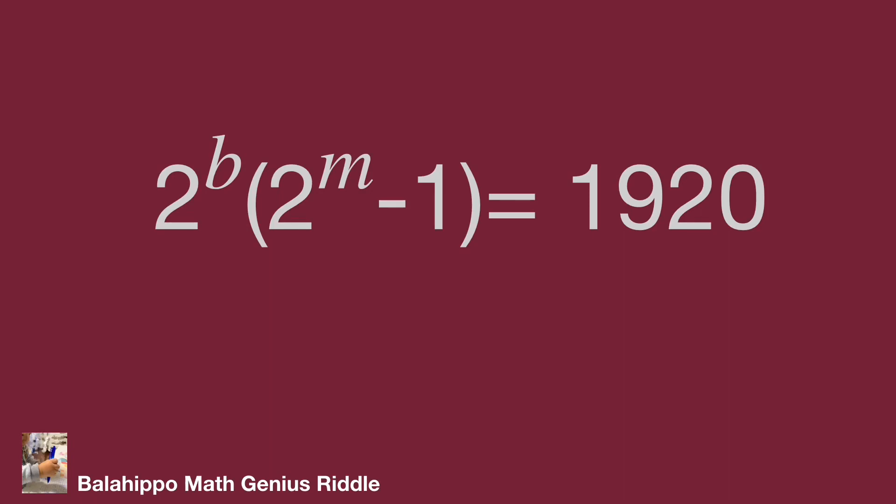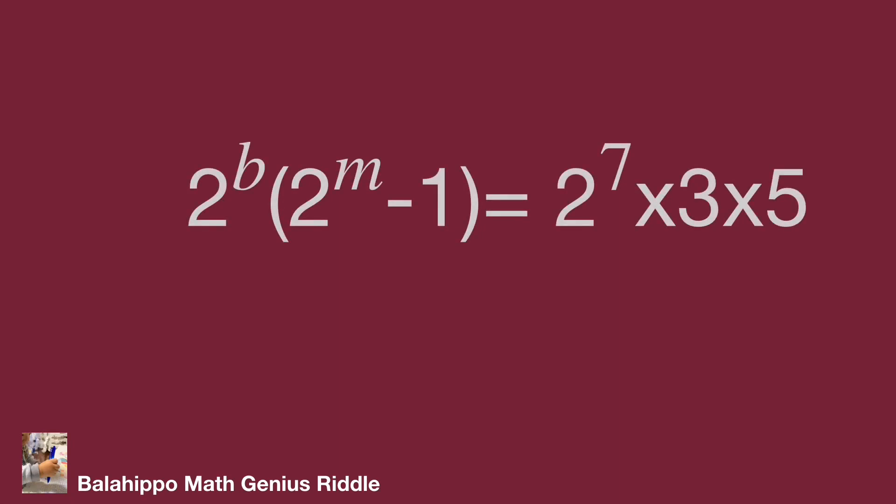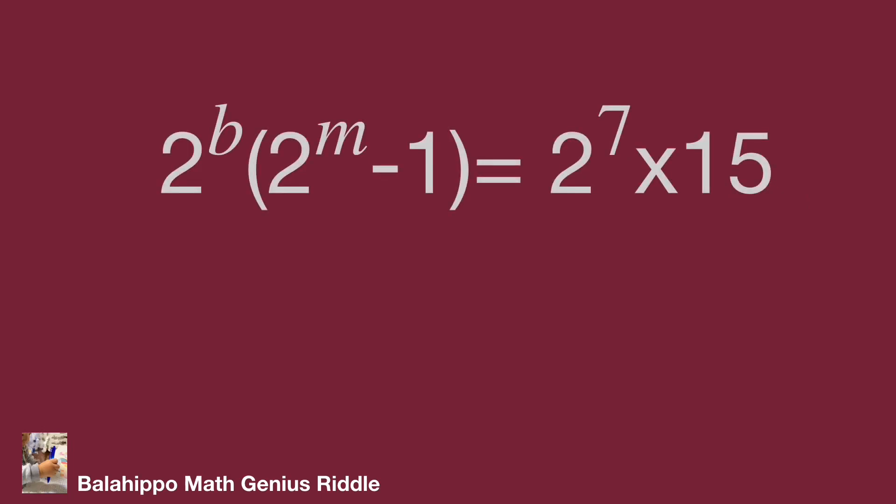In this new equation, let's look at the number 1920. Factorize 1920 equals 2 power 7 times 3 times 5. Rewrite the equation as 2 power b times bracket 2 power m minus 1 bracket equals 2 power 7 times 15.